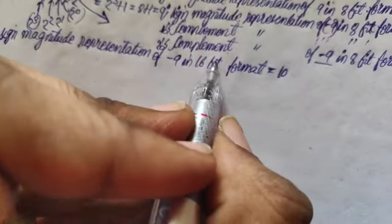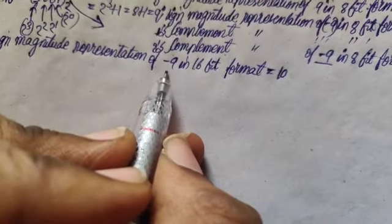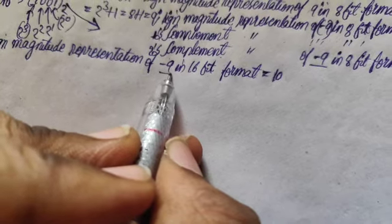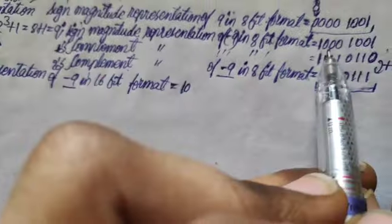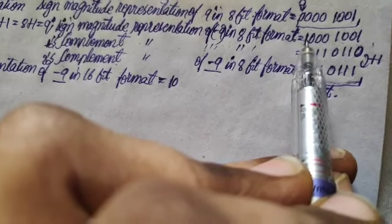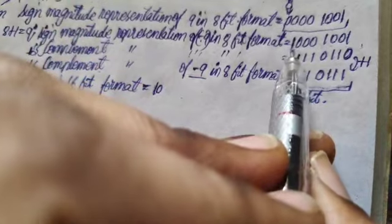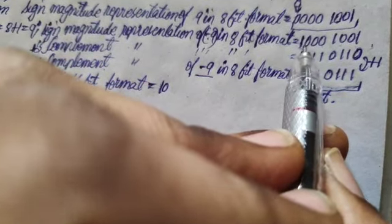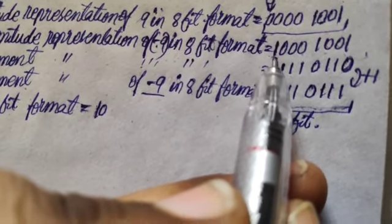This is for the 8-bit format. When you talk about the 16-bit format, the sign-magnitude representation of minus 9 is going to be as follows. You can observe here we have this minus sign, so because of that this MSB bit is going to be 1.